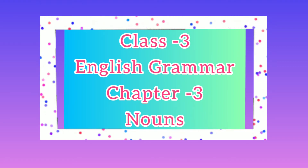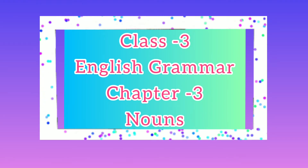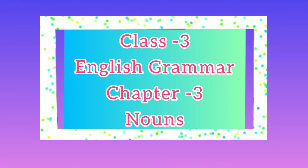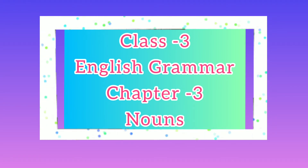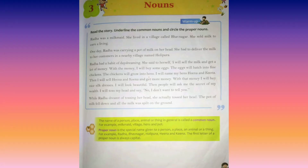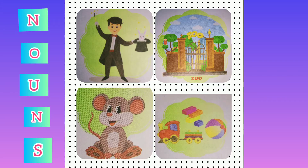Good morning children. Hope you all are fine and safe. In today's class we are going to learn English grammar chapter 3 nouns. You have already learned about nouns in class 2. Do you remember that? Everything around us has a name. Nouns are naming words for person, place, animal and thing.